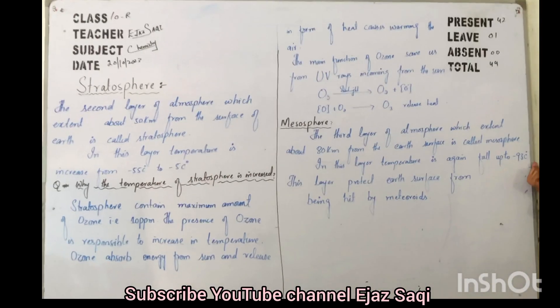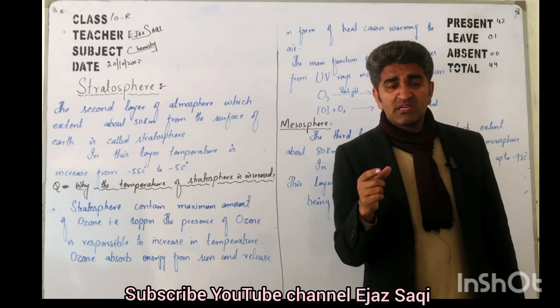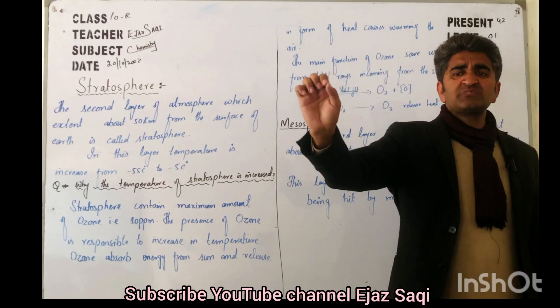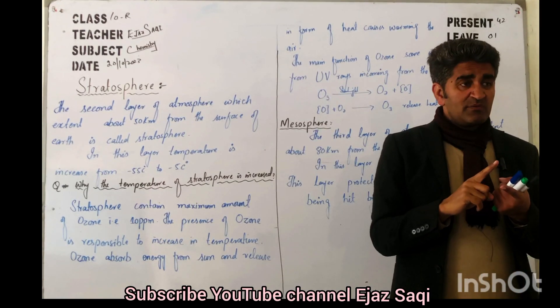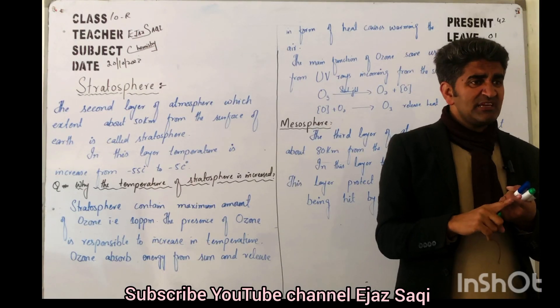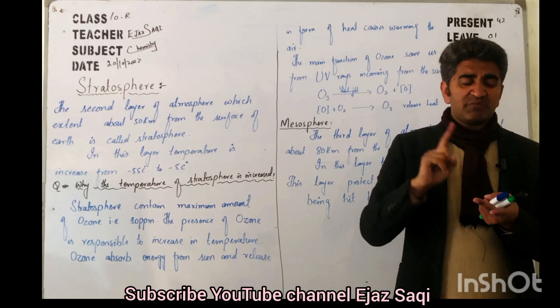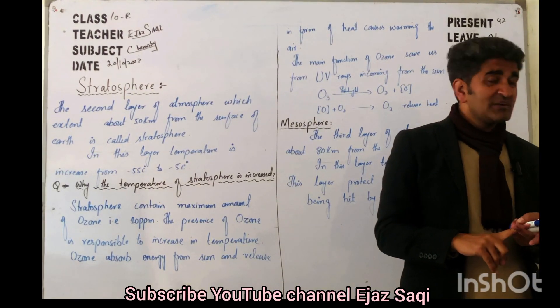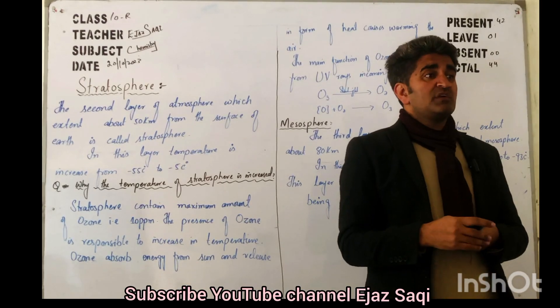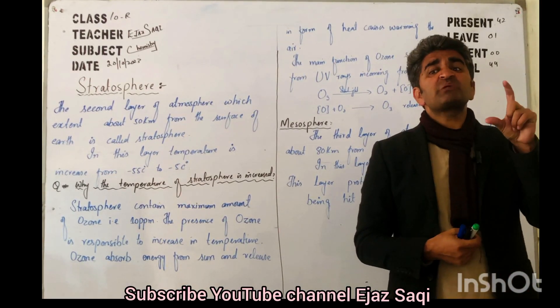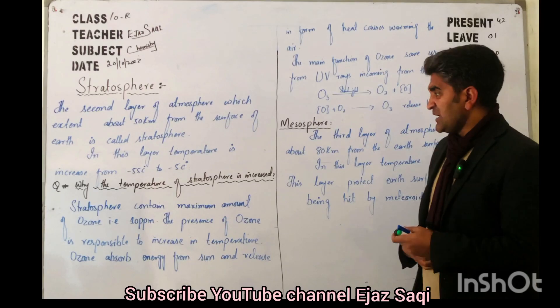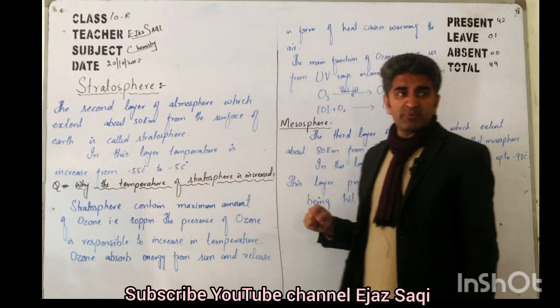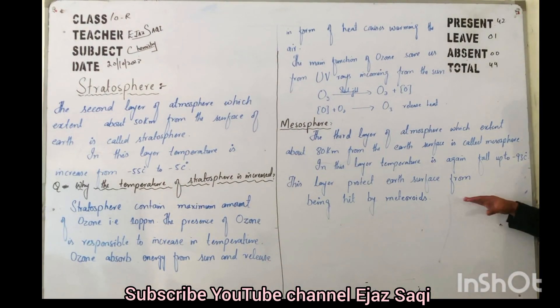The temperature of this mesosphere falls from top to bottom. So it starts from here minus 55, minus 55 to minus 5, minus 5 to minus 93. This is the maximum and minimum temperature. This is the minimum temperature, this one is the maximum temperature.